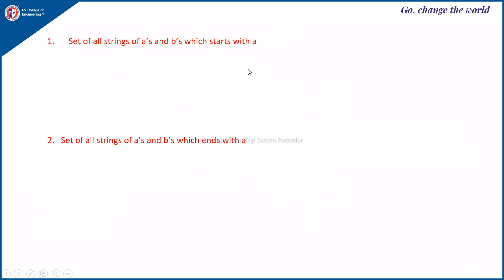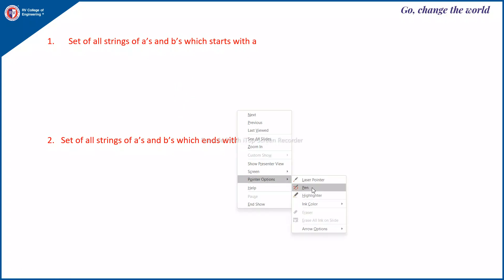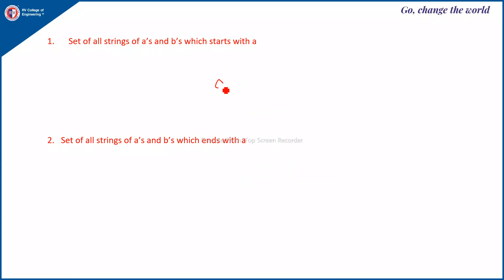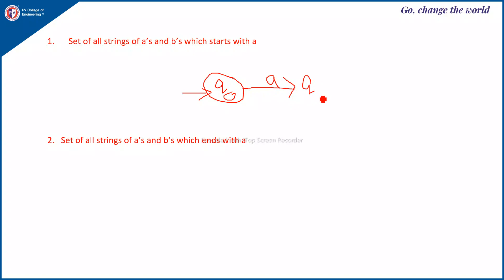Now, set of all strings of A's and B's which starts with A. The machine will be looking like this: since it starts with A, from Q0 you have a transition only on A. In a DFA on B you would go to the trap state, which is not required in NFA. If it is starting with A you just go to the final state Q1, and after the first symbol the final state has a self loop on A and B.